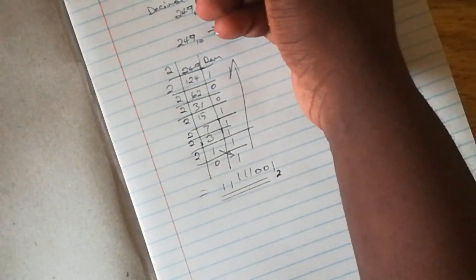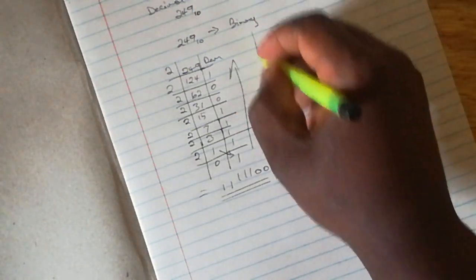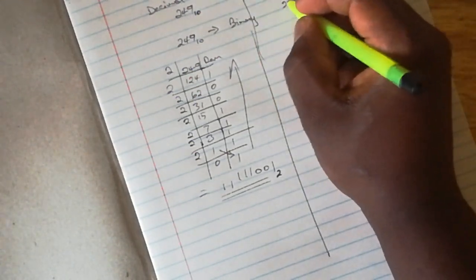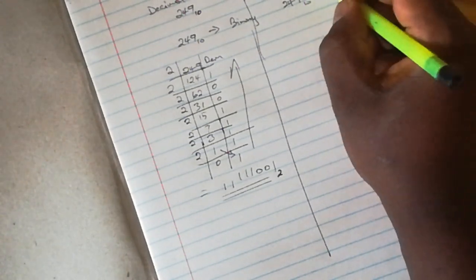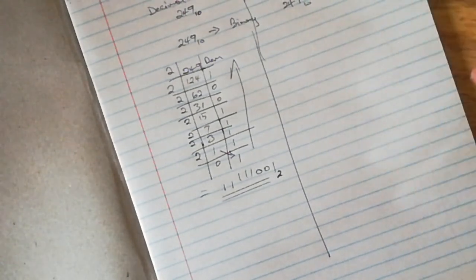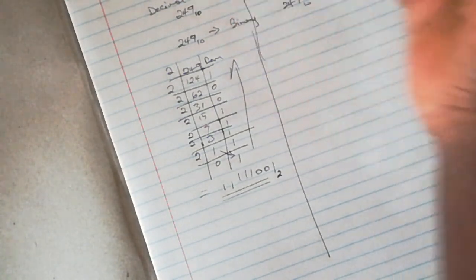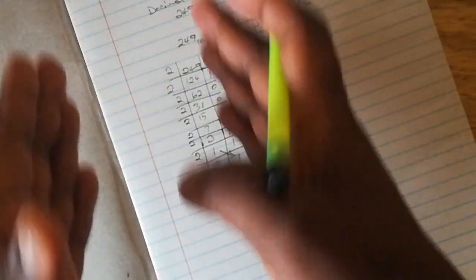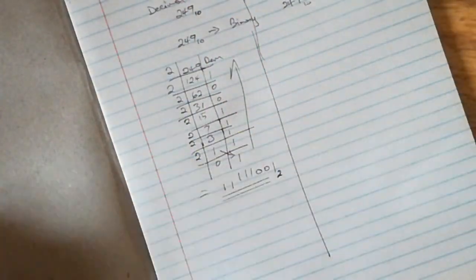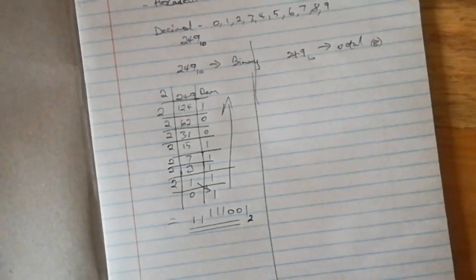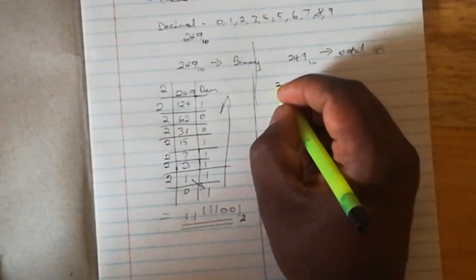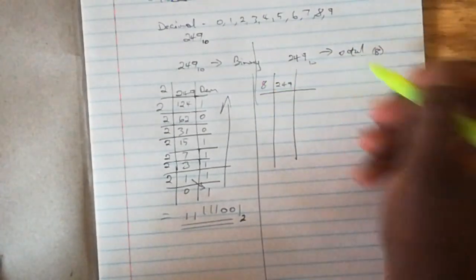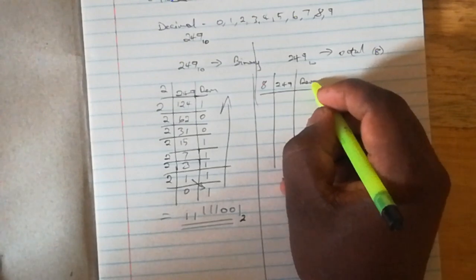On to our next conversion: decimal to octal. I'll use the same figure, converting 249 to octal. Octal has 8 digits, 0 through 7, so the base is 8. Now I'm going to do the same thing - division by the base of the number system I'm targeting. So 249 divided by 8, which is our octal base, and we'll be noting the remainders.